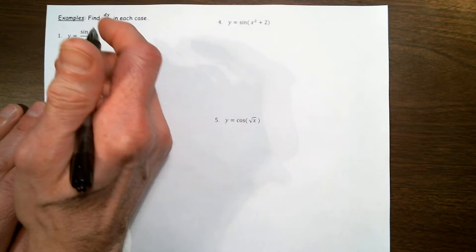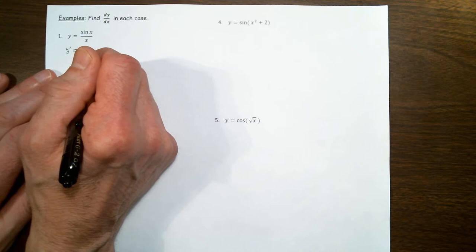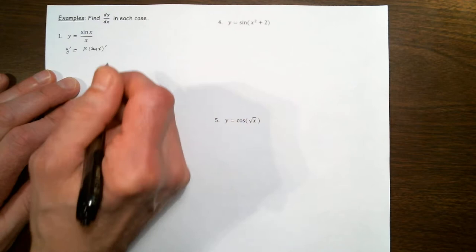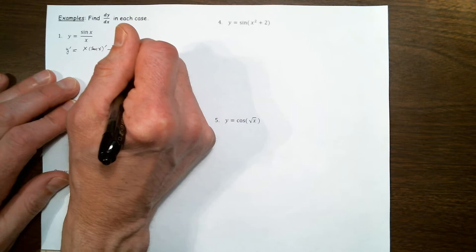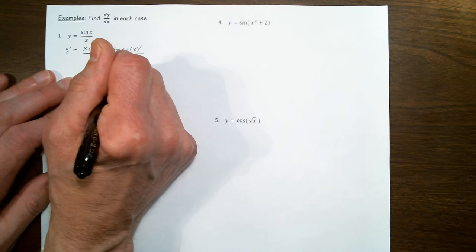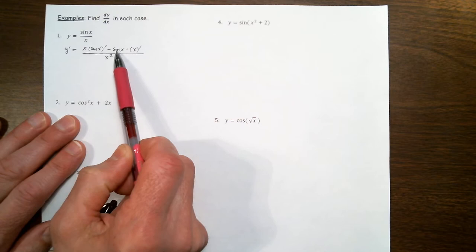So dy/dx, or y prime, is going to be the denominator x times the derivative of the numerator — the derivative of sine — minus the numerator sine of x times the derivative of the denominator, the derivative of x. We divide the difference by the denominator squared, x squared. That's simply an application of the quotient rule: bottom times derivative of the top, minus top times derivative of the bottom, over the bottom squared.